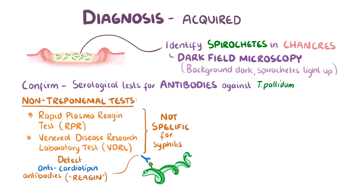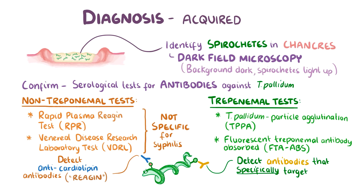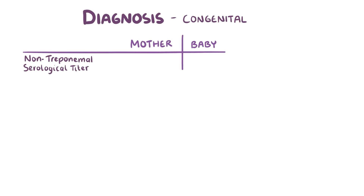For example, cardiolipin is also released by damaged cells in our body. Then we have the treponemal tests, which include T. pallidum particle agglutination (TPPA) and fluorescent treponemal antibody absorbed (FTA-ABS). These treponemal tests detect antibodies that specifically target T. pallidum. Diagnosing congenital syphilis is a bit different — it involves looking at the mother's and the baby's results in parallel. For example, if a baby's non-treponemal serologic titer is 4 times greater than the mother's titer, like if the baby's RPR is 1:64 and the mother's is 1:16, then that suggests the baby has congenital syphilis.